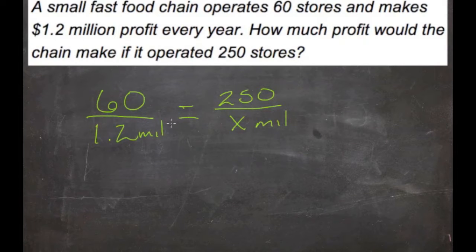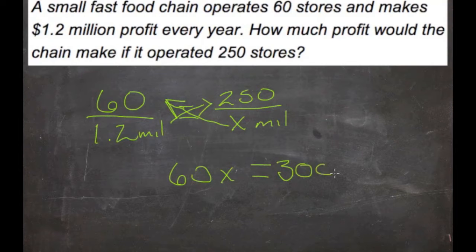So we'll take 1.2 times 250 and we'll take 60 times x. So we'll get 60x equals 1.2 times 250, which is 1.2 times 250, which equals 300. That's 300 million dollars.